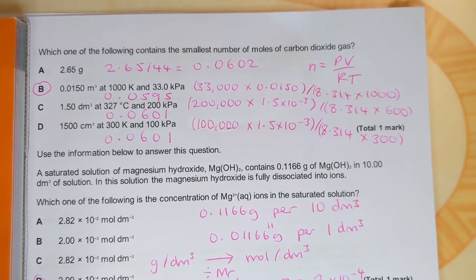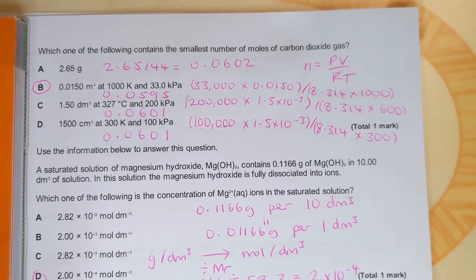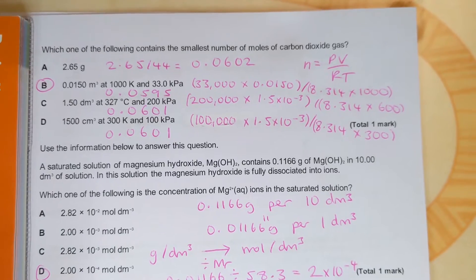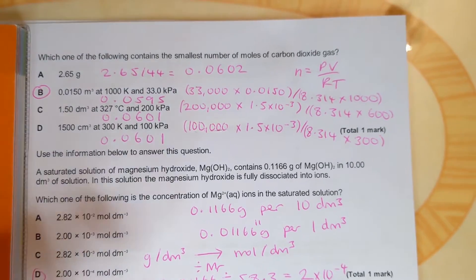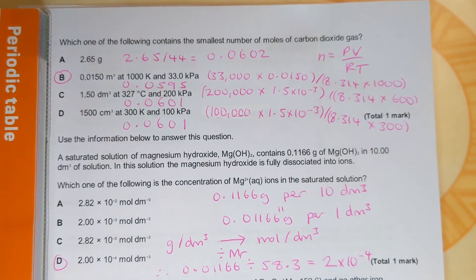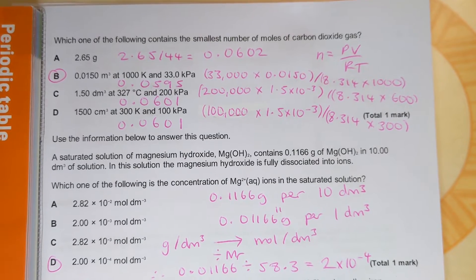So this next one says which of the following contains the smallest number of moles of carbon dioxide gas. And in the first one we're just given a mass so that's a straightforward mass over molar mass to work out the moles and we get 0.0602.